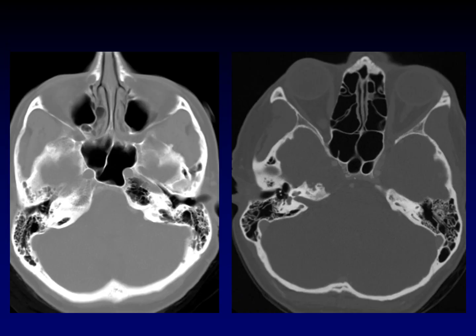In patients with asymmetric pneumatization of the petrous apex, the CT is a complete giveaway. This is normal bone marrow. This is normal air cells. This asymmetry is clear when you see it on CT. It's only confusing when you're looking at a T1-weighted MR image, when this asymmetry really pops out at you. So this is asymmetric pneumatization.